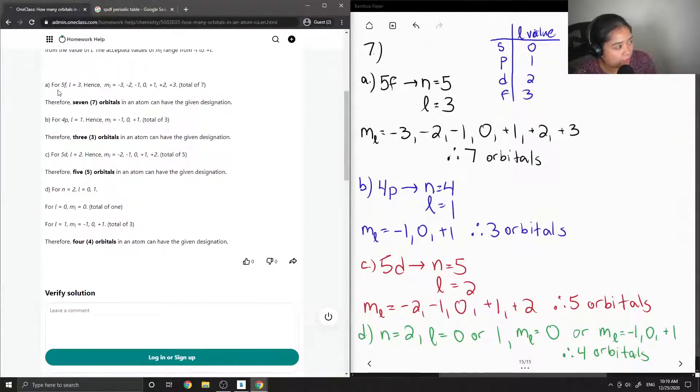For 5f, l is equal to three. Hence, ml equals negative three, negative two, negative one, zero, one, two, or three. So a total of seven orbitals in an atom can have the given designation.